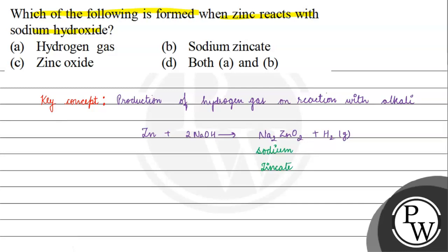Option A, hydrogen gas. Option B, sodium zincate. Option C, zinc oxide. Option D, both A and B.